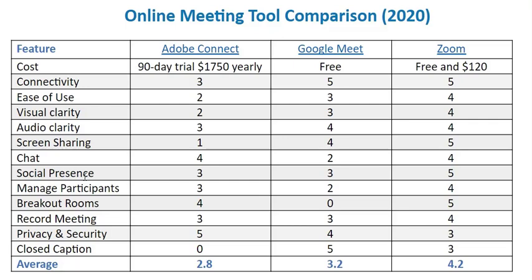Social presence is your feeling about being in a community or in a room. Adobe Connect isn't that good because everybody looks really small on the screen, and because of the connectivity issues and visual and audio clarity, social presence is undermined if you have a weak internet connection. Google Meet is not that great either because it allows you only to see four people on the side instead of the entire group; however, you can download a grid add-on to see the entire group. Zoom allows you to see the entire group in a grid view naturally, so I rated it higher.